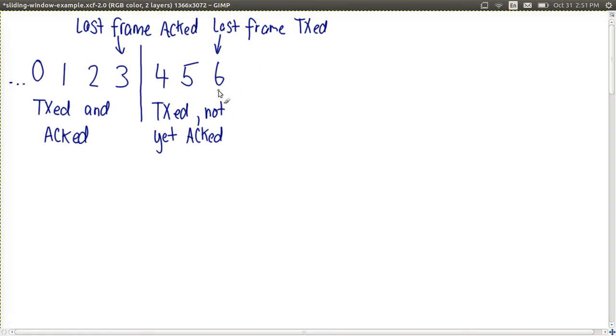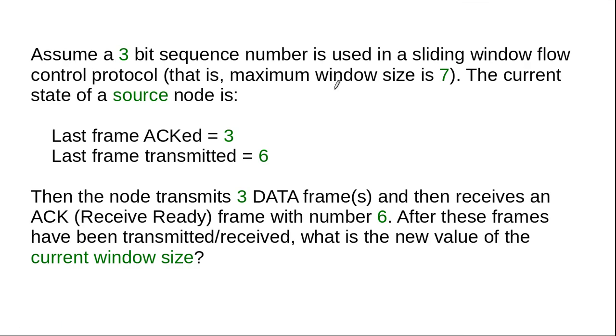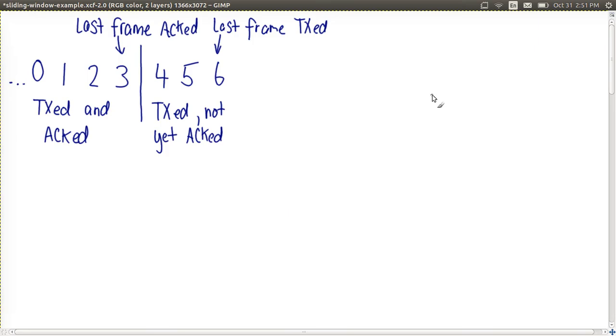Now with sliding window, the source is allowed to have a window size, or the maximum window size number of frames outstanding. So we've currently got 3 transmitted. The maximum window size is 7. Which means at this point in time, the source is allowed to send another 4 frames.